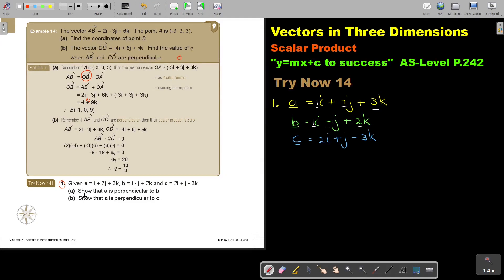So, if the questions say, show that A is perpendicular to B, I'm going to find the scalar product, and I will show that it's having a result of 0. So, let's first find, this is number A.